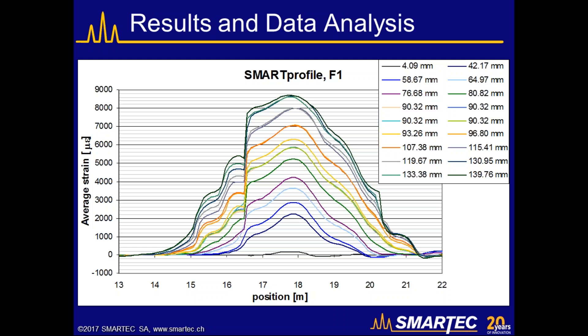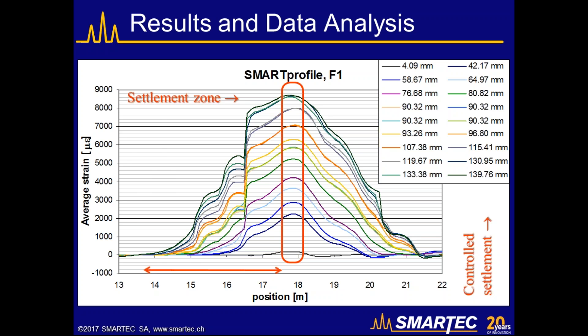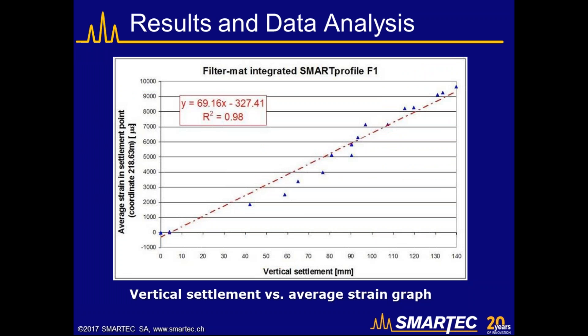Once we applied the vertical deformation, we could record the strain as a function of position. The different colored curves correspond to different levels of settlement. For small settlements, deformation is concentrated close to the settlement zone, and as settlement progresses, longer sections of the cable record strain. The maximum is always recorded at the location of the settlement — in this case at 18 meters from the beginning of the cable. There is an almost linear relation between recorded strain and vertical settlement, meaning we can not only detect and localize the settlement but also estimate its size and determine if it is increasing, decreasing, accelerating, or stabilizing.